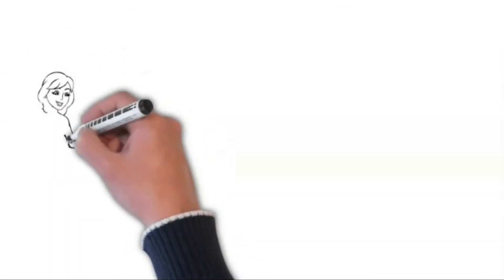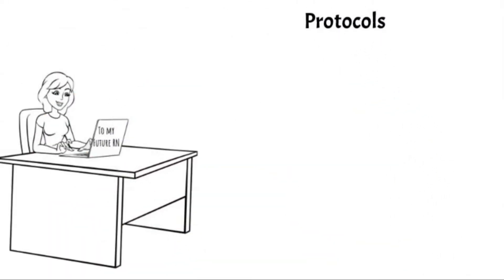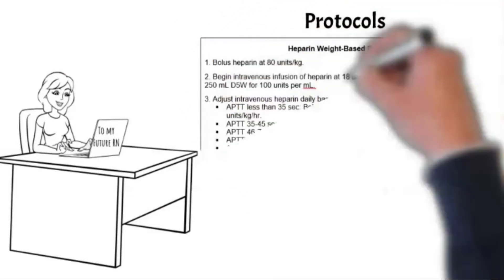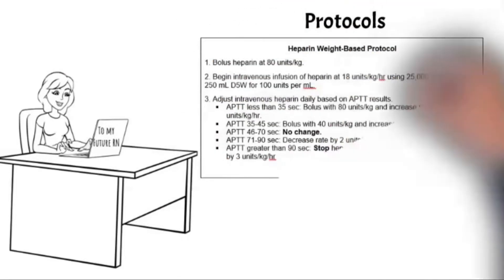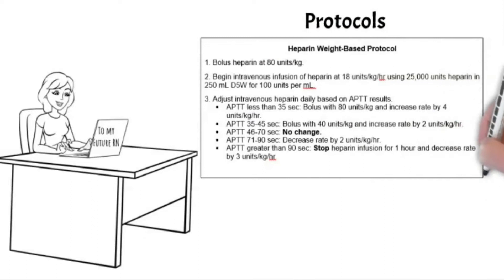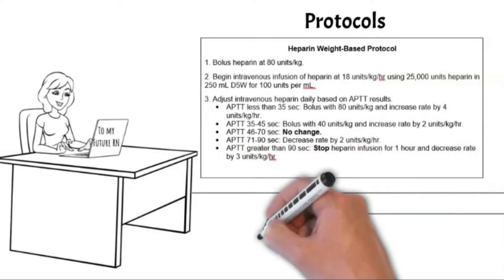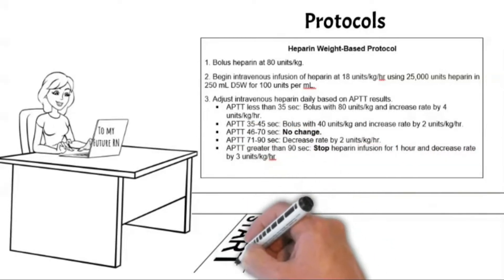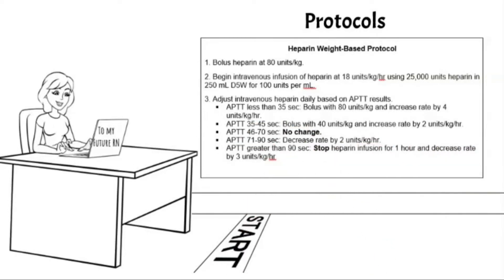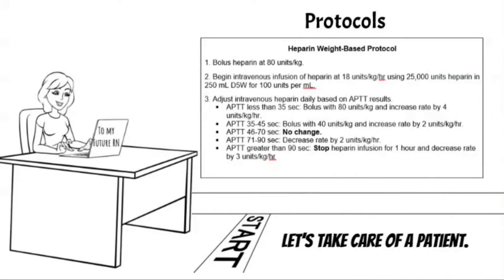Let's take a look at a weight-based heparin protocol example. Notice it tells you how much to bolus a patient according to their weight — you need to know their weight in kilograms. Then it tells you how to titrate your heparin drip according to your aPTT results. Now that you have some knowledge on heparin, let's apply this to a patient case.